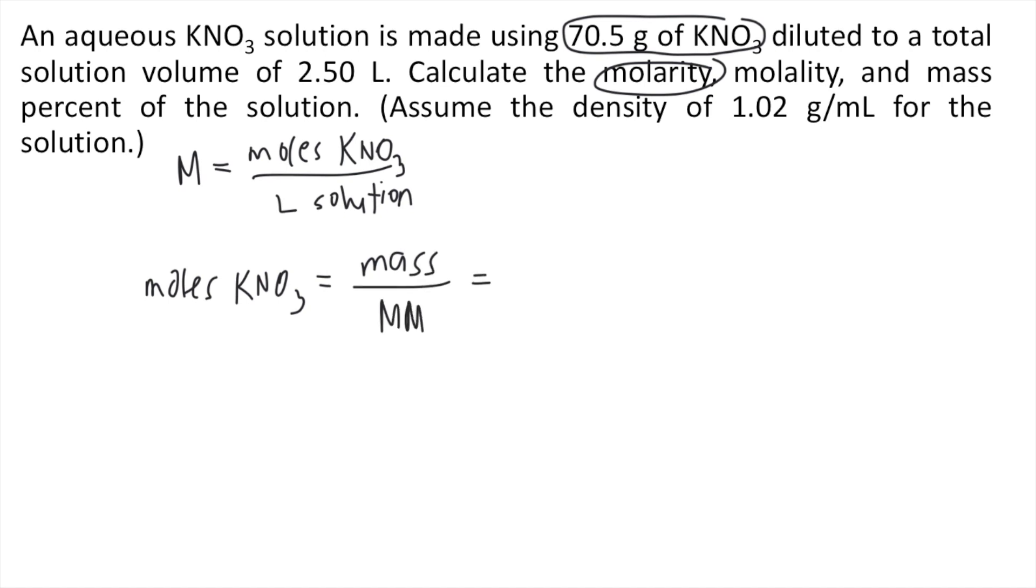So the mass given is 70.5 grams divided by... Now you can solve the molar mass of KNO3 using your periodic table of elements. So the molar mass of KNO3 is 101.1 grams per mole.